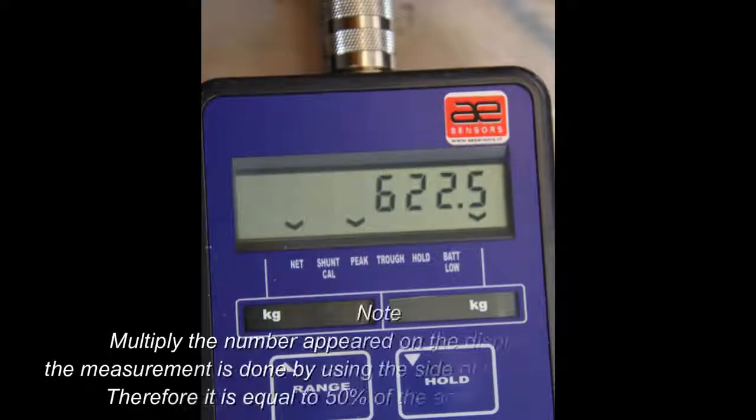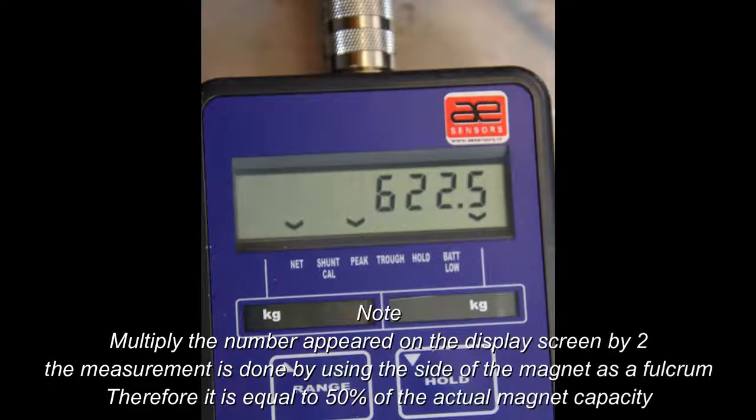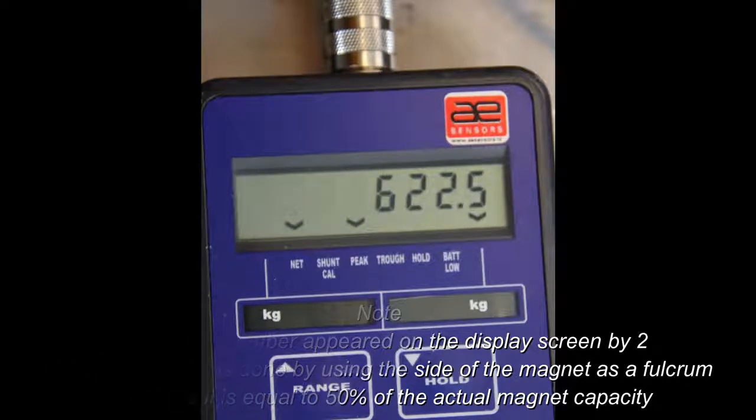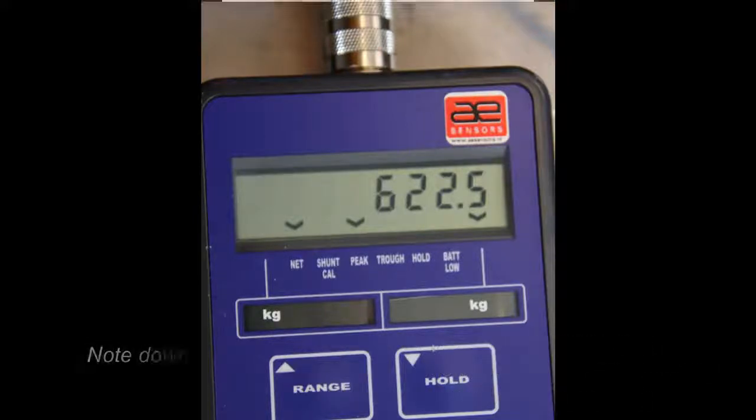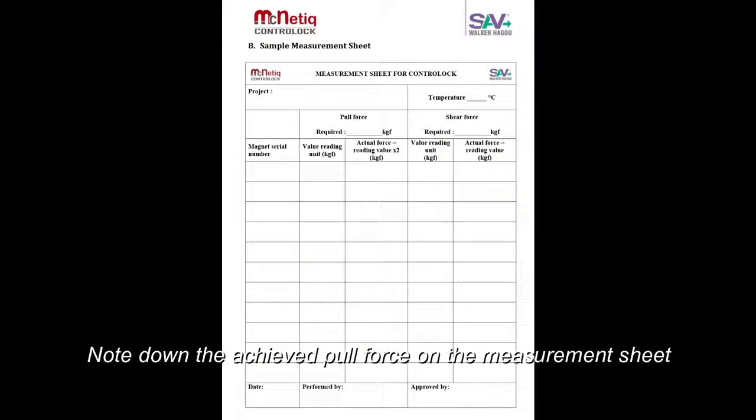Multiply the number appeared on the screen by 2. The measurement is done by using the side of the magnet as a fulcrum. Therefore, it is equal to 50% of the actual magnet capacity. Write down the achieved pull force on the measurement sheet.